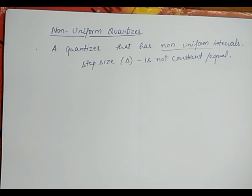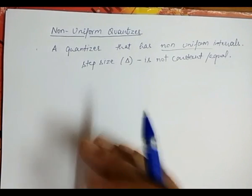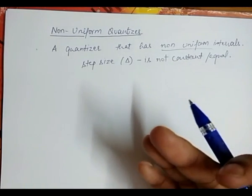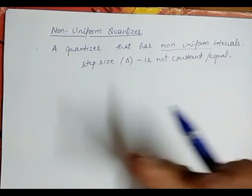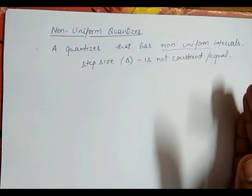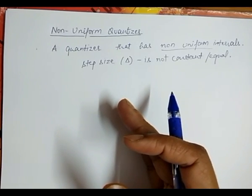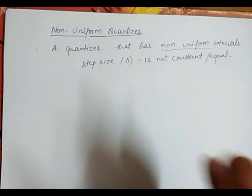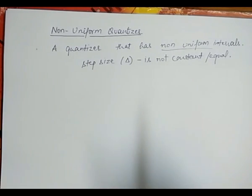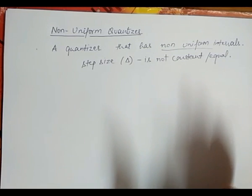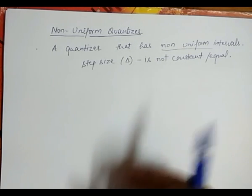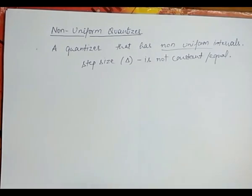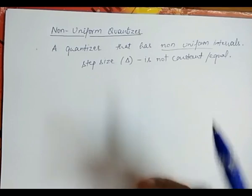If we talk in detail about the non-uniform quantizer — in the case of lossless compression, we know that to minimize the average number of bits per symbol, the symbol having high priority is assigned a shorter codeword and the symbol having low priority is assigned a longer codeword. You have already seen this approach in the case of Huffman coding. This is all about lossless compression where we minimize the average number of bits per input symbol.